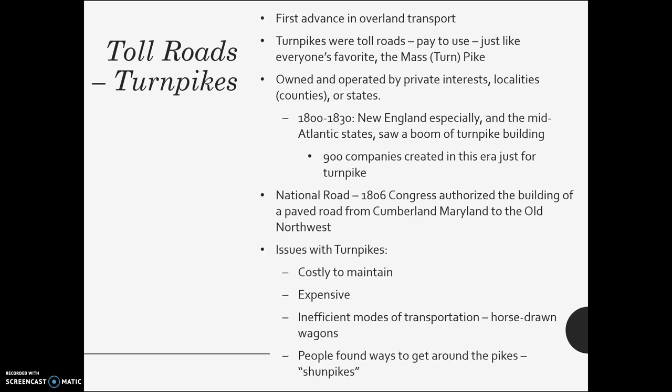As you can see, there were 900 of them created. There was a national road for the first time — a road connecting Maryland and the old Northwest. A problem with turnpikes was they're costly and expensive to maintain. That's why a lot of people avoid toll roads today. You're still using horse-drawn wagons, and people are going to find ways around the shuntpikes to avoid paying. It's making it a little easier to get from here to there, but we're still over a century away from having the road networks we have today.